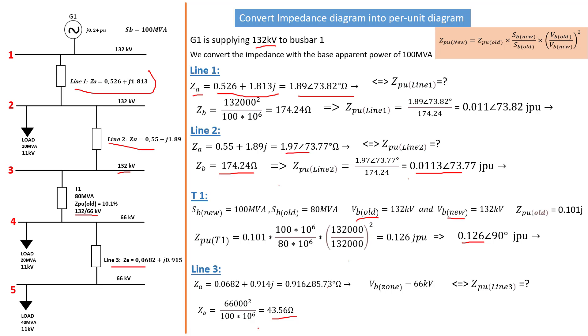Now we can calculate our Z per unit which is Z actual over ZB and that gives us this value for Z per unit of line 3: 0.021 with an angle of 85.73 degree J per unit ohm.